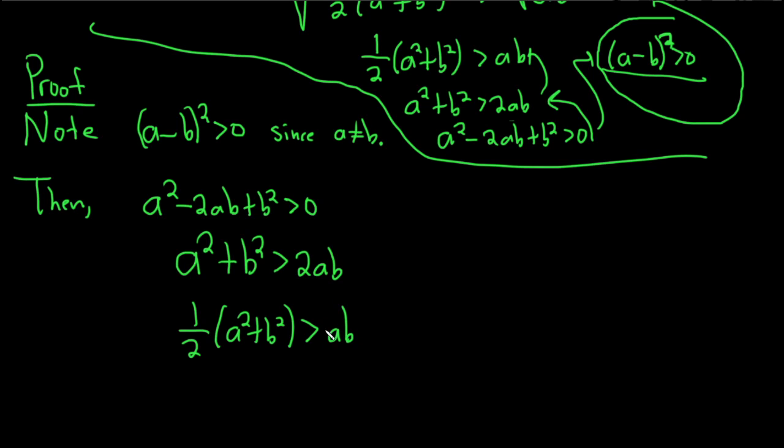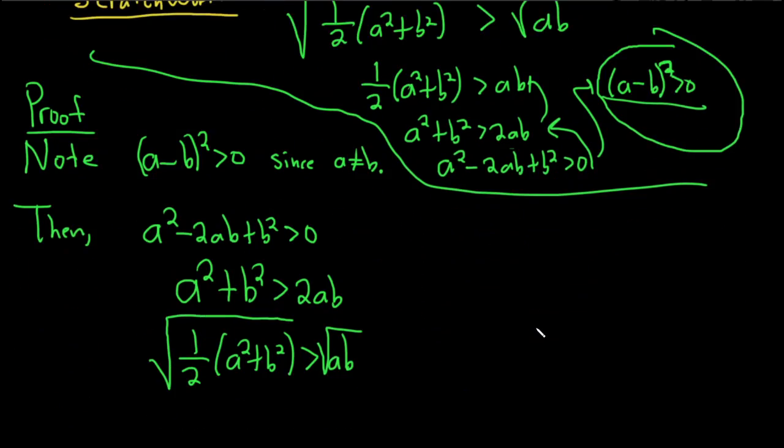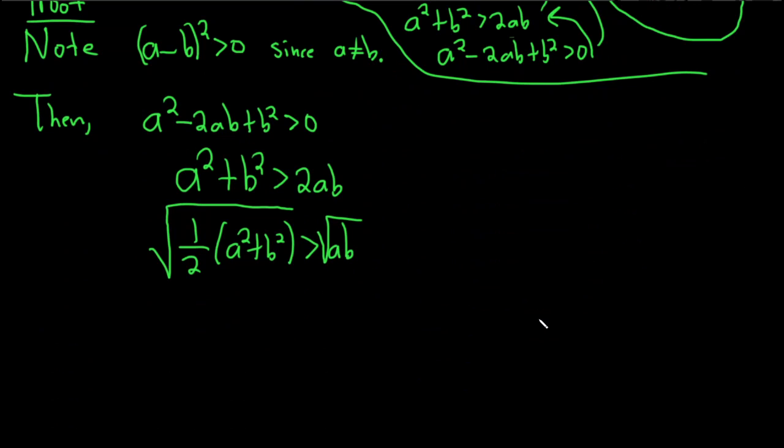And everything here is positive, right? Because A and B are positive. So then we just take the square root. And we're good. We've shown the inequality. We've shown that the root mean square is greater than the geometric mean, or that the quadratic mean is greater than the geometric mean whenever A, B are positive and distinct. And that completes the proof.